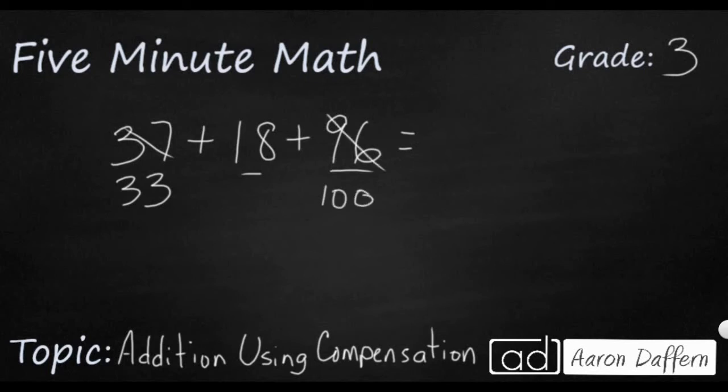While I'm at it, let me just go ahead and take another 2 away. I'm going to add that to my 18. And now I've got something that I can add mentally. 31 and 21 is 51. Add to 100 is 151. That's how compensation works.